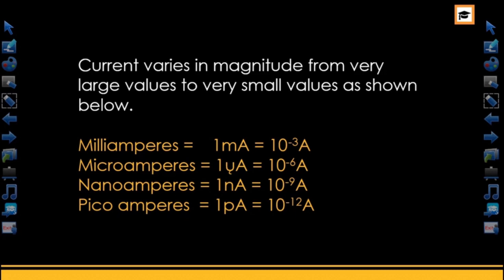We have milliamperes — milliampere is 10 to the power of minus 3, and the symbol is small letter m. Microamperes is 10 to the power of minus 6, symbol is μA. Nanoamperes is 10 to the power of minus 9, and the symbol is nA.